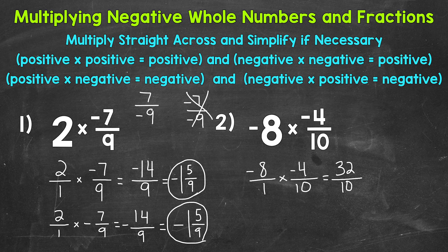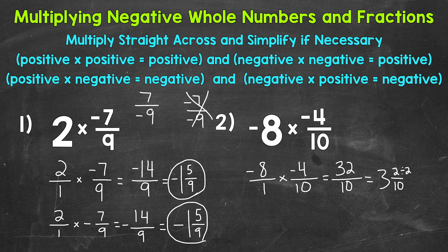One times ten is ten, so we get 32 tenths, or 32 over ten, which is an improper fraction. We convert to a mixed number by dividing 32 by ten: three whole groups of ten get us to 30, with a remainder of two. We keep our denominator of ten, giving us three and two tenths. We can simplify two tenths — there's a common factor of two — so two divided by two is one, and ten divided by two is five. Our final simplified answer is three and one fifth, which is positive.